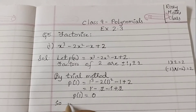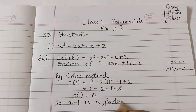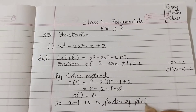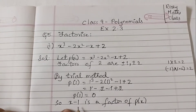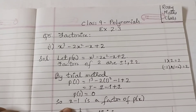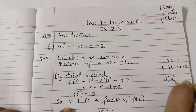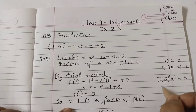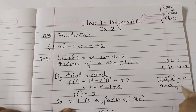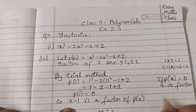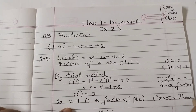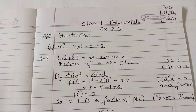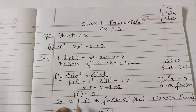Which means x minus 1 is a factor of p(x). This we know because of the factor theorem. Factor theorem states that if p of a is equal to 0, where a is any number, then x minus a is a factor of the given polynomial. So this is by factor theorem — you can just mention that.